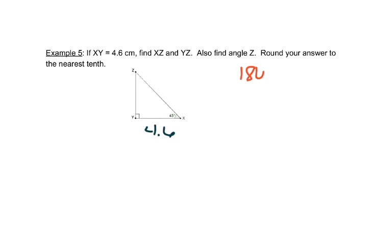180 degrees in a triangle. So if I subtract the 90 and I subtract the 45, I know that my other angle has to be 45 degrees. So I have a 45-45-90 triangle.